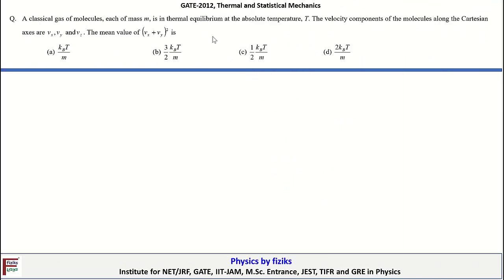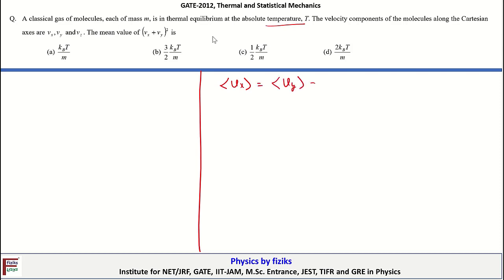Now let's look at the next problem. A classical gas of molecules, each of mass m, is in thermal equilibrium at absolute temperature T. The velocity components of the molecules along Cartesian axes are Vx, Vy, and Vz. We need to find the mean value of (Vx + Vy)². We require two important results: the average of Vx equals the average of Vy equals the average of Vz equals zero.